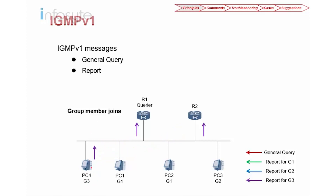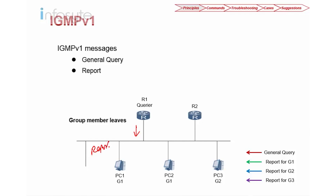If PC4 shuts down or leaves, R1 will send a query. If that query receives no report within a certain period of time, the router will automatically prune the multicast group. So Group 3 will be pruned after the idle timeout expires. This is how IGMP version 1 handles group membership removal.